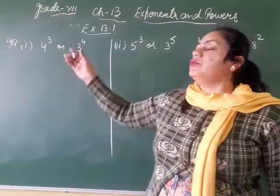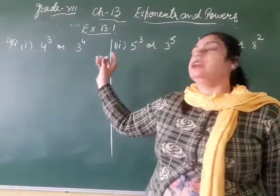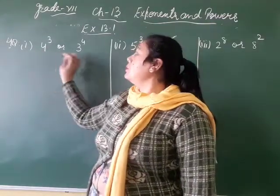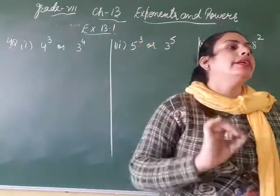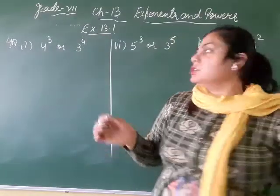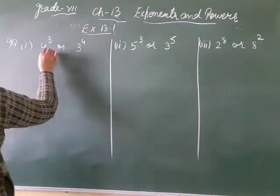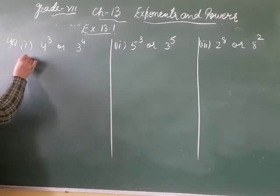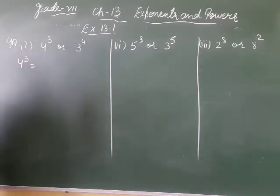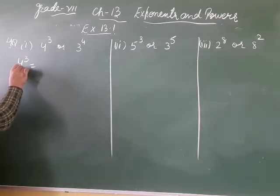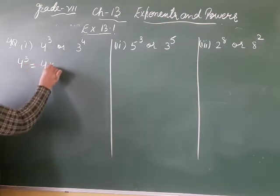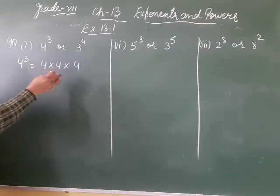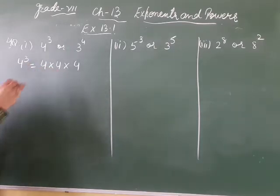We start our fourth question. The fourth question is that you have to find the greater one — you are given two numbers and you have to see which is greater. So we expand. Your first number is 4 raised to power 3. 4 raised to power 3 means we multiply its base, which is 4, three times.